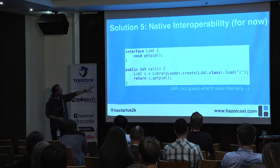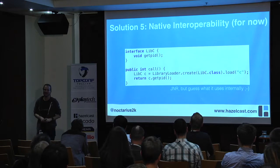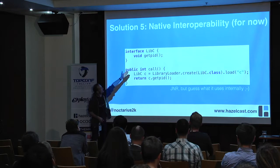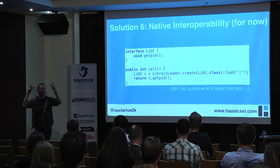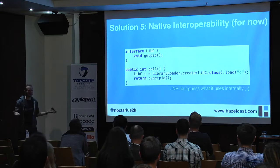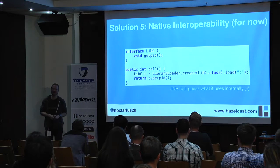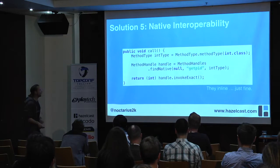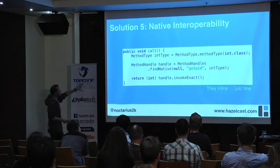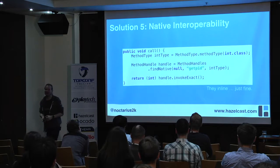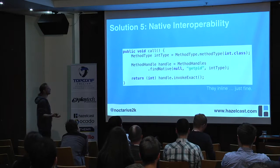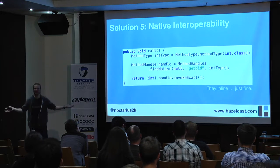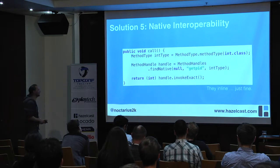JNR does all the JNI magic on the fly, generating binding code in assembler inside the JVM at runtime. You just define an interface with your method — like getPid() — and say please create an implementation and bind it to the standard C library. Then you just call it. This is so attractive that something similar is coming to Java via method handles — findNative. You don't even have to specify the library; it tries to figure out the call, or you can define the library if there are multiple. It works similarly: I say there's an int return type, bind it to this native call and make it happen.